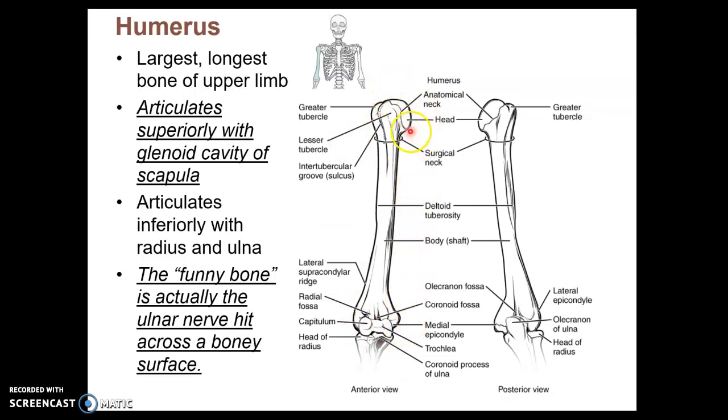The head is your ball portion of the ball and socket joint, which articulates with the glenoid cavity of the scapula. You have a greater tubercle and a lesser tubercle for muscle attachments and this intertubercular groove for your biceps tendon. On the diaphysis, there's a deltoid tuberosity for your shoulder muscle to insert onto.